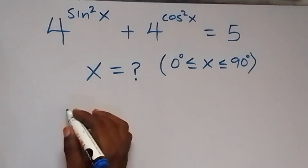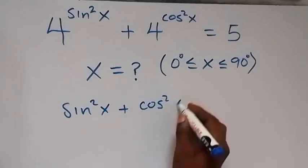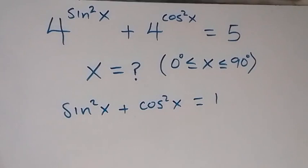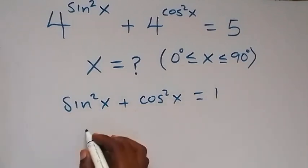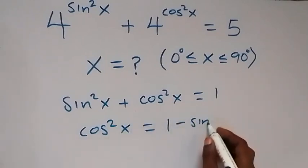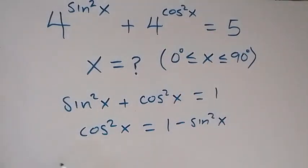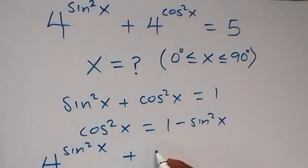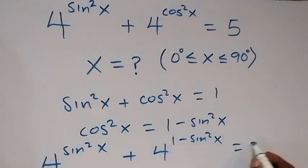Recall that we have sine squared x plus cosine squared x equals 1. Let's make cosine squared x the subject, taking sine squared x to the other side, so cosine squared x equals 1 minus sine squared x. We can now rewrite the equation, replacing cosine squared x with 1 minus sine squared x, giving us 4 raised to sine squared x plus 4 raised to the power 1 minus sine squared x equals 5.